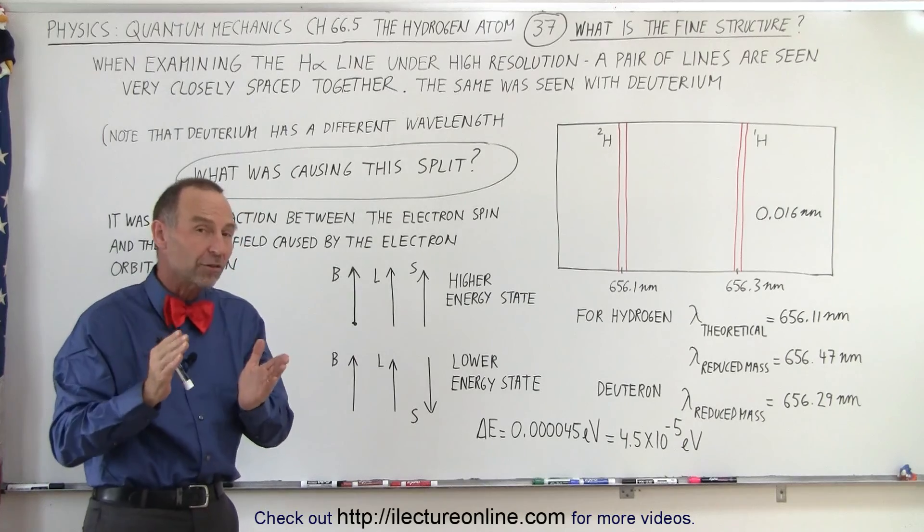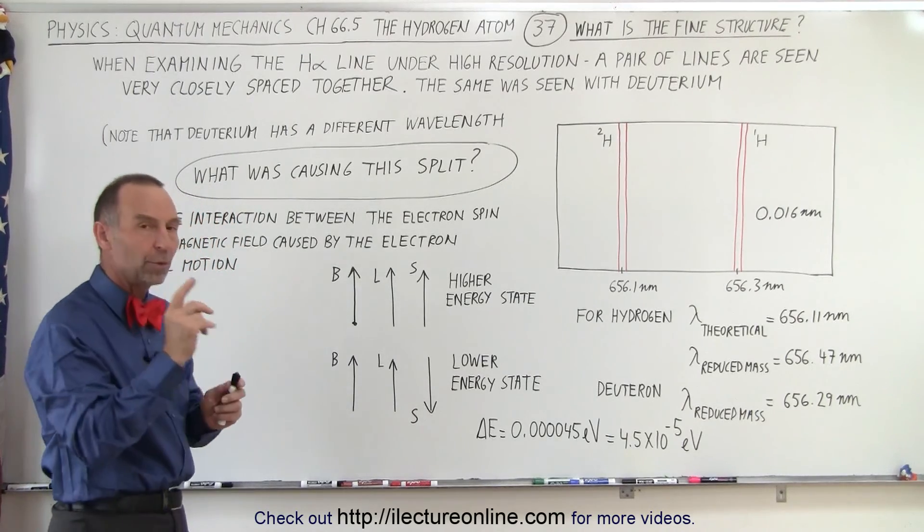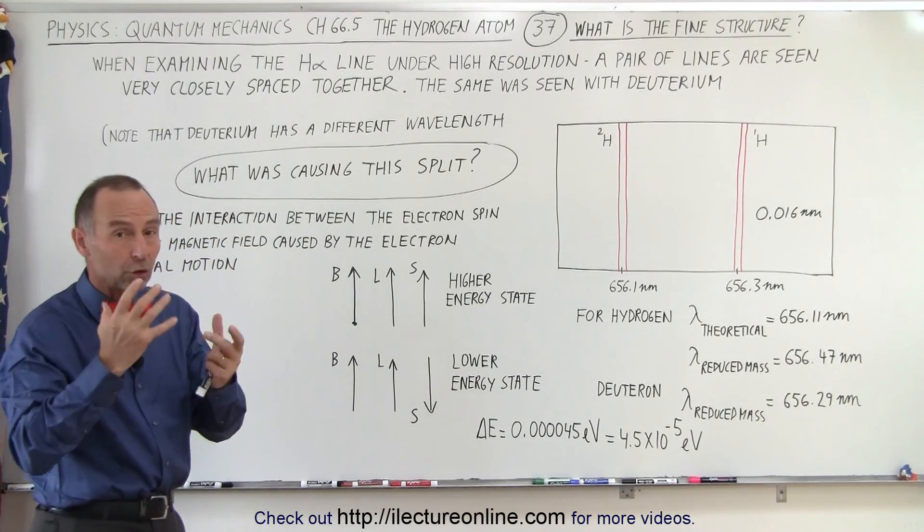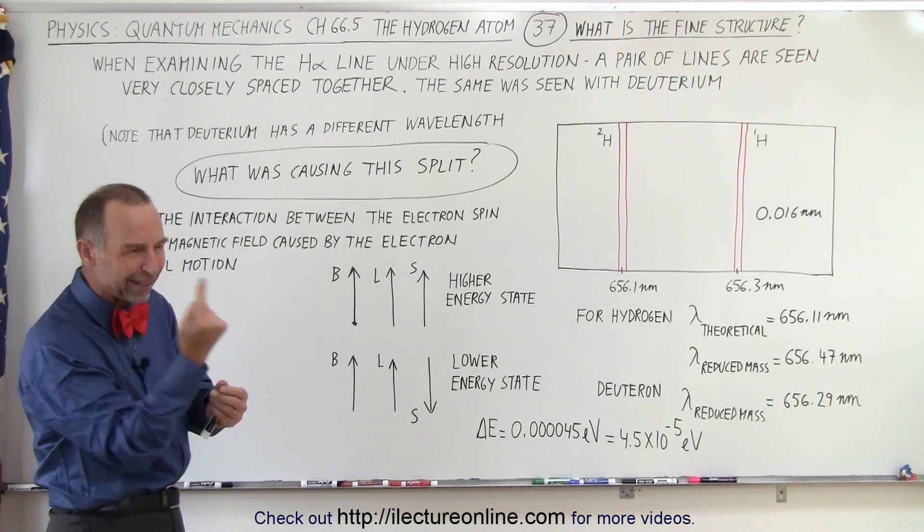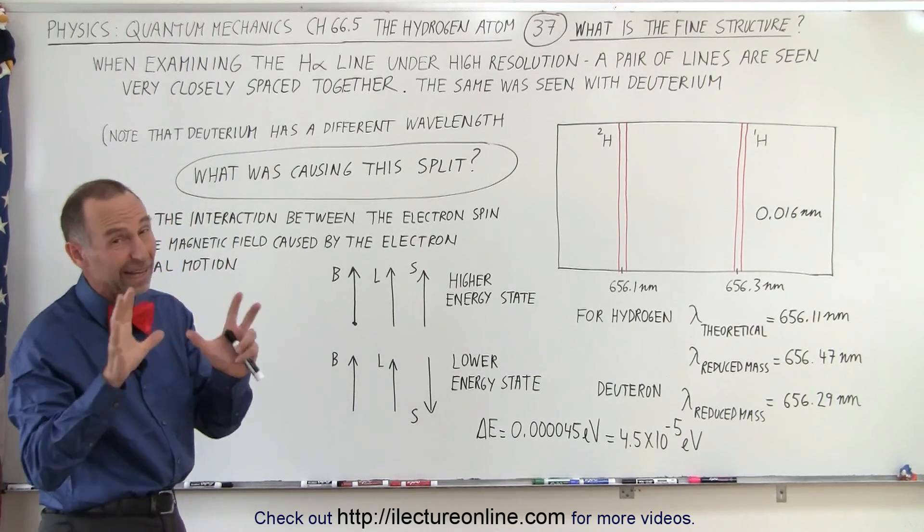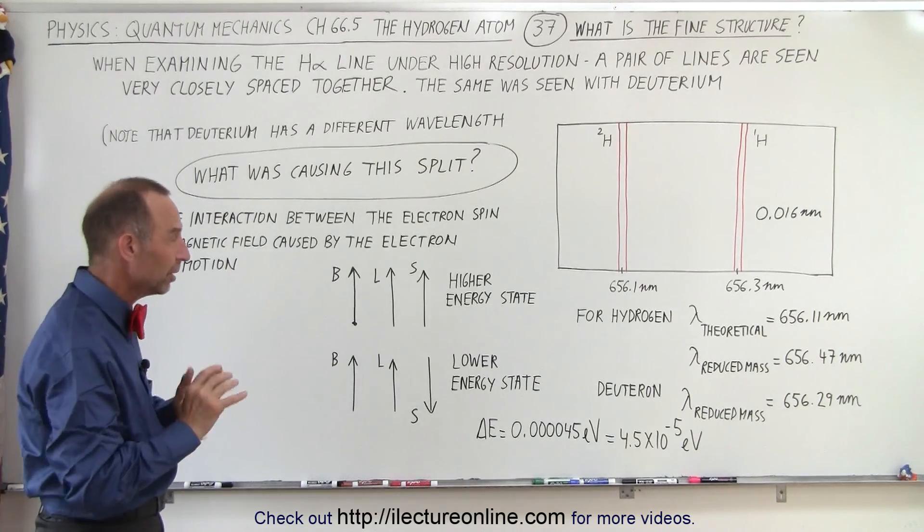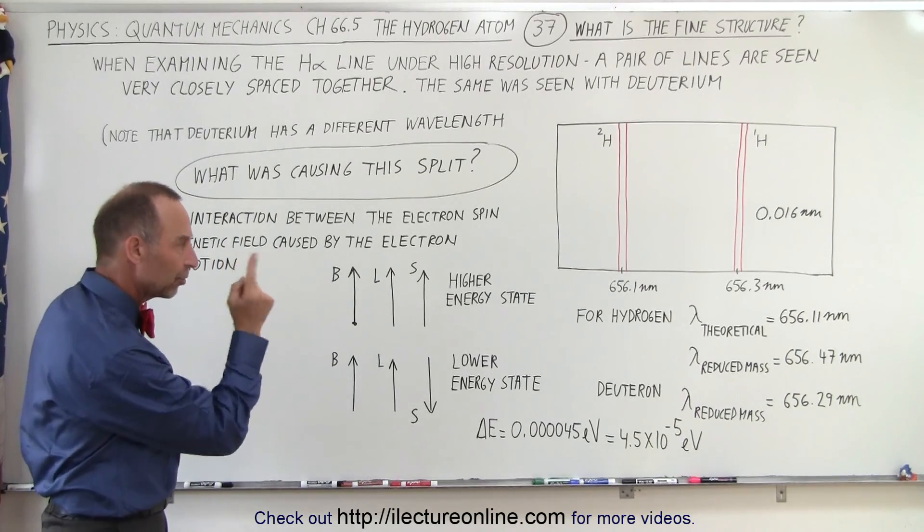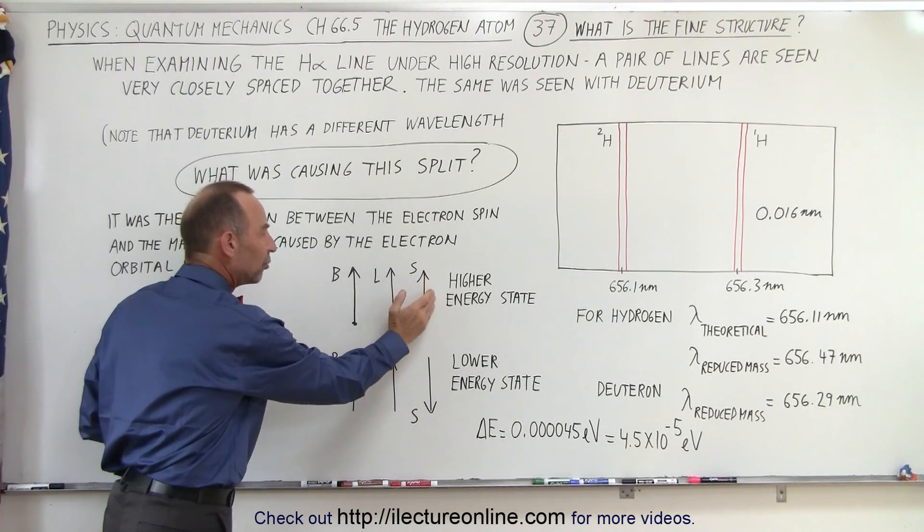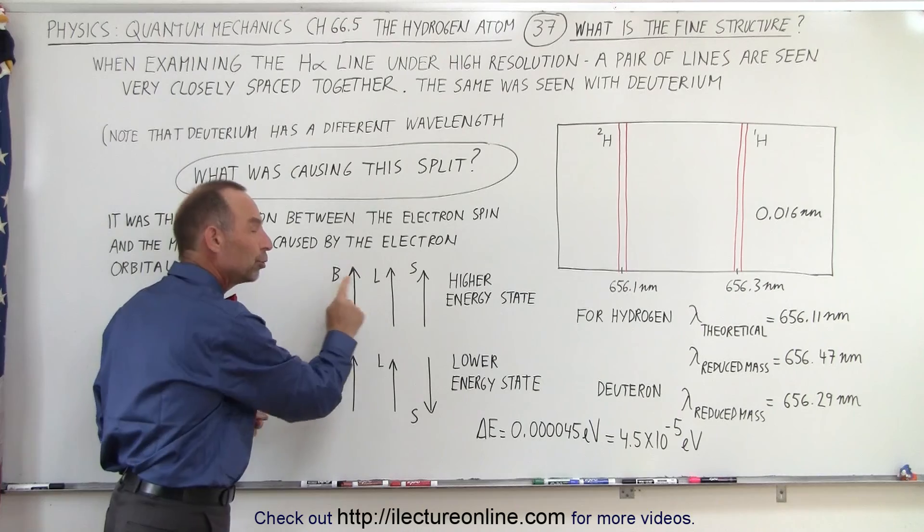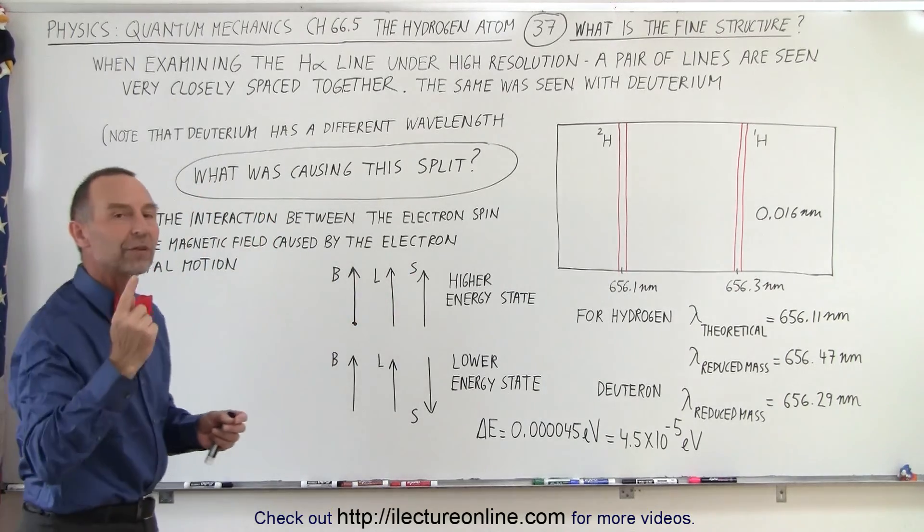Well it turns out it's actually caused by the interaction between the spin of the electron. All small particles like that have intrinsically a spin property. It's kind of like something turning on its own axis, although it's not quite that for the electron, but it has the same kind of property as spinning on its own axis, and that spin interacts with the magnetic field produced by the orbital motion of the electron.